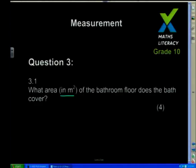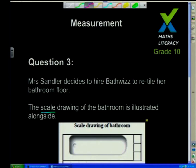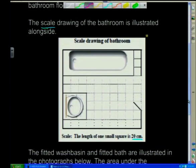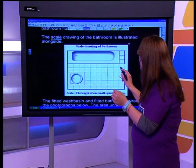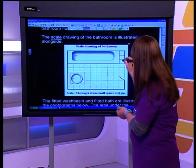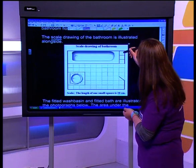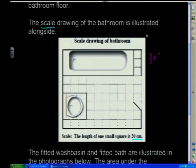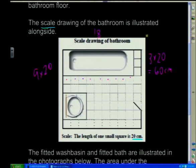What is the area in metres squared of the bathroom floor that the bath covers? Each small square is 20 centimetres. The bath covers 3 squares in breadth: 3 times 20 is 60 centimetres. Counting across the bath there are 9 squares, so the length is 9 times 20, which is 180 centimetres. To find the area, convert first: 180 cm is 1.8 metres and 60 cm is 0.6 metres. Area is 1.8 times 0.6 equals 1.08 metres squared.